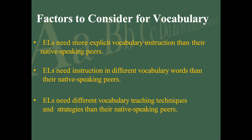Their need for vocabulary teaching techniques and strategies is going to be different. Beginning ELs are probably learning those tier one, everyday common words. Many of us are teaching tier two words, which is extremely important because those are the cognitive academic ones that will help kids in lots of different subjects. English learners are at different rates and levels of vocabulary development, and we need to make sure that we're cognizant of that.